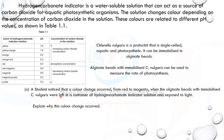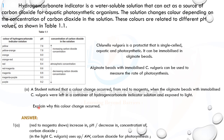The color change from red to magenta occurred because the concentration of CO₂ decreased, causing the pH to increase. This happened because photosynthesis occurred — the C. vulgaris used up CO₂ for photosynthesis in the light. Red to magenta shows increase in pH or decrease in concentration of carbon dioxide. That's two marks.